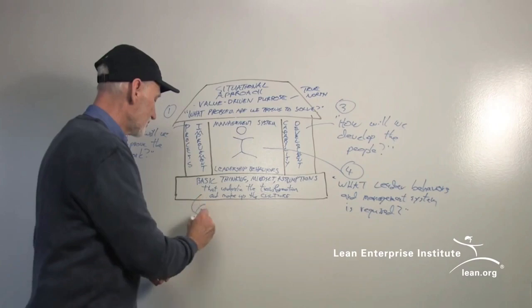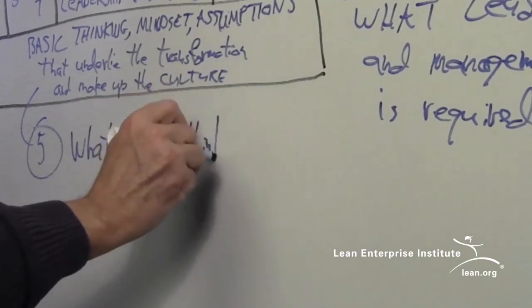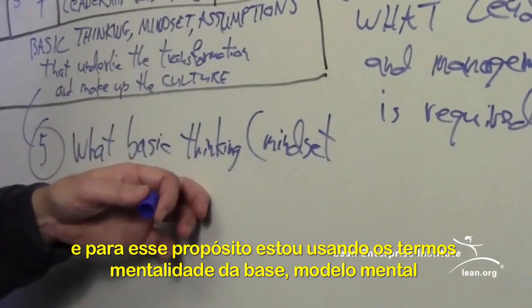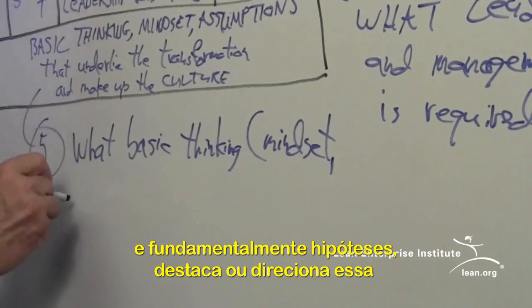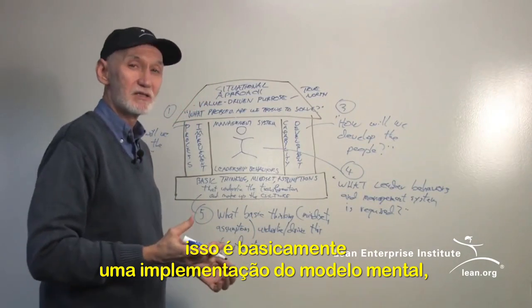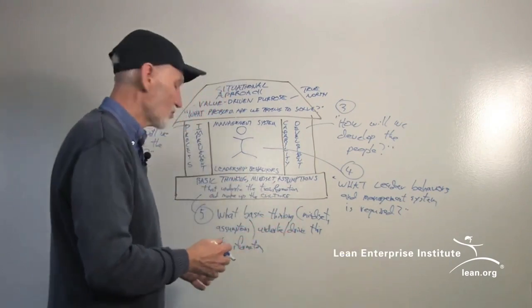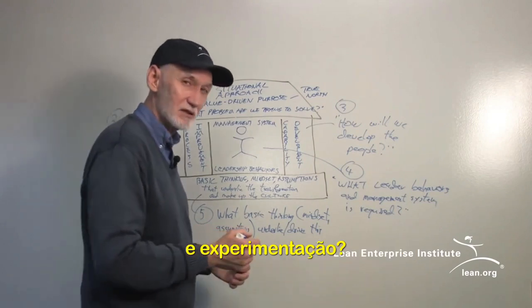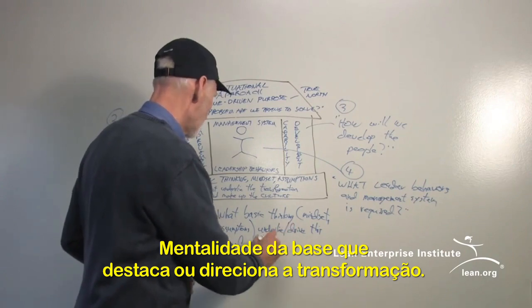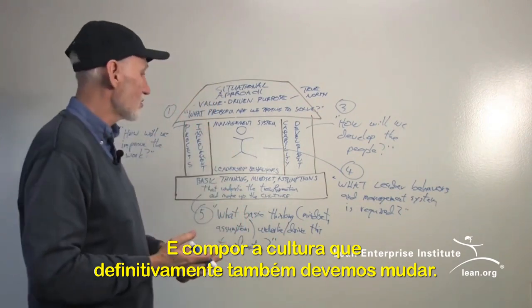Question five addresses the basic thinking, and asks simply: what basic thinking, mindset, and fundamental assumptions underlie or drive this particular transformation? For example, is it mainly an implementation mindset — going to do benchmarking, find best practices, and implement them — or is it a mindset based more on science and experimentation? What basic thinking drives this transformation and makes up the culture that we must ultimately also change?